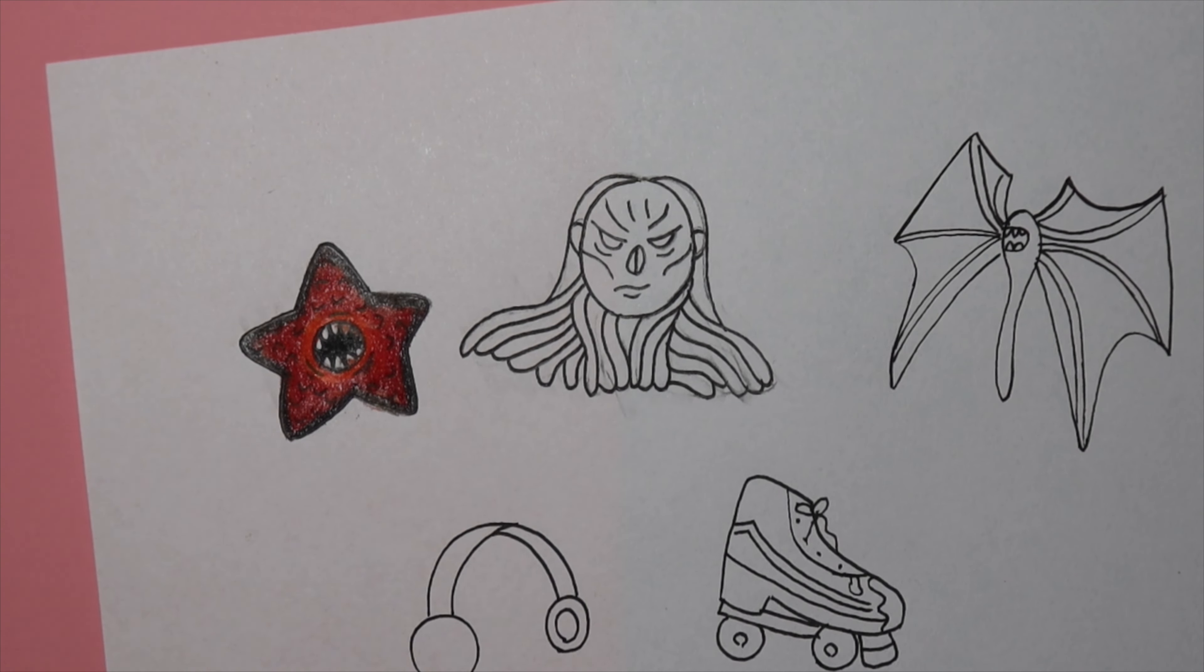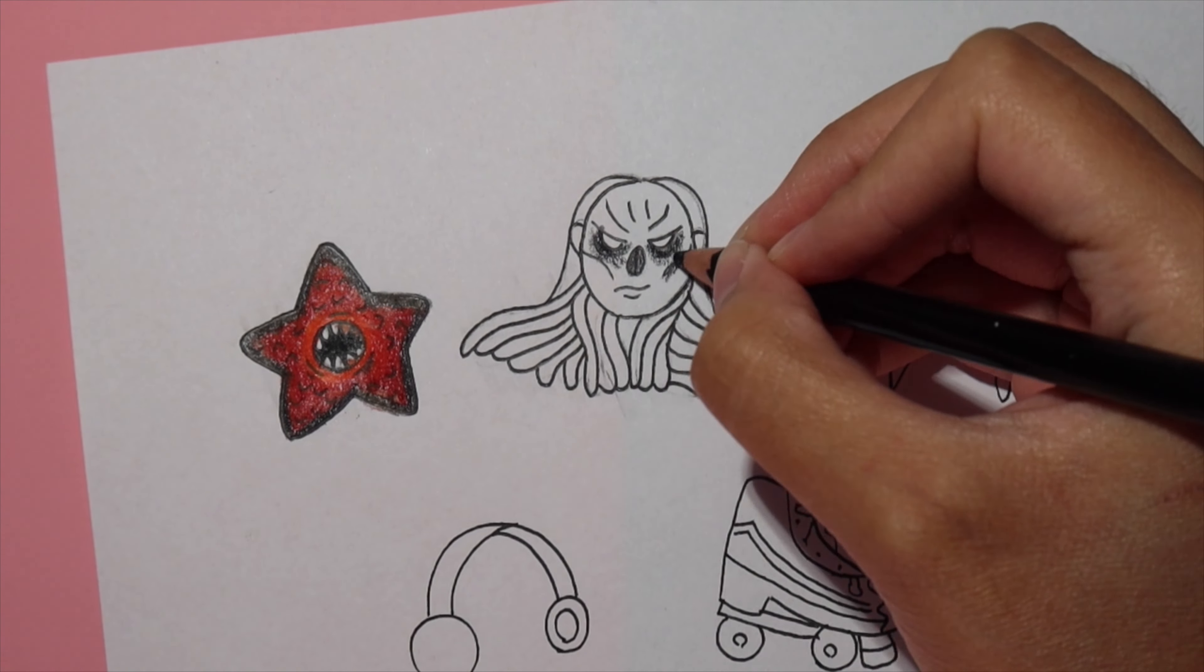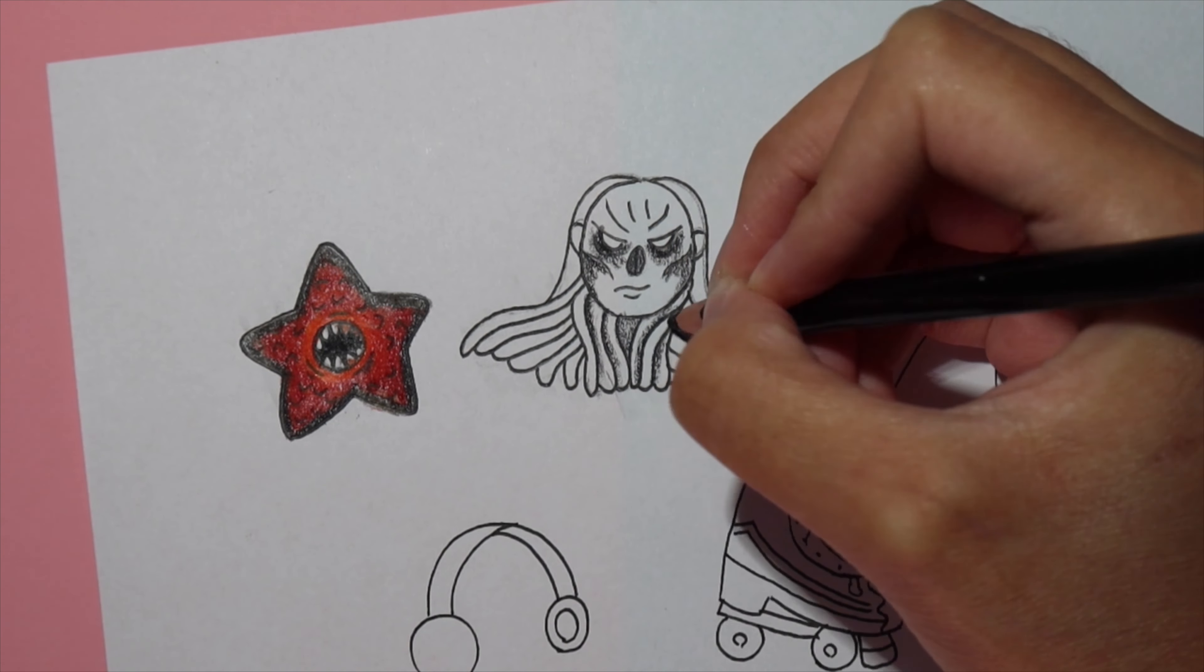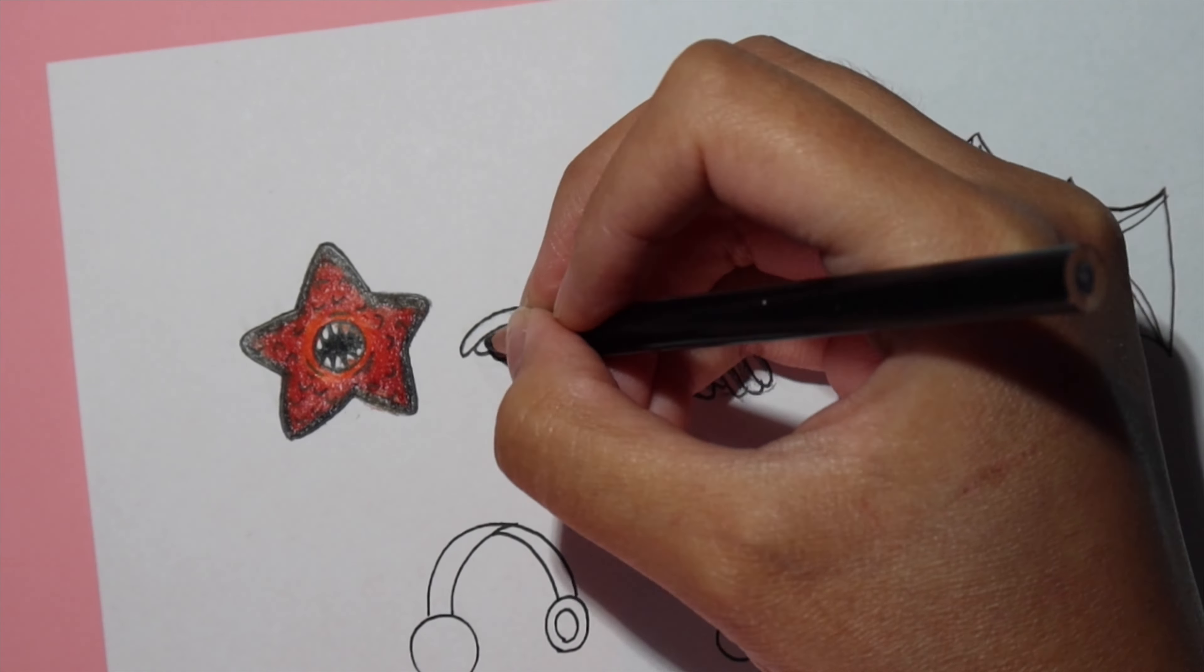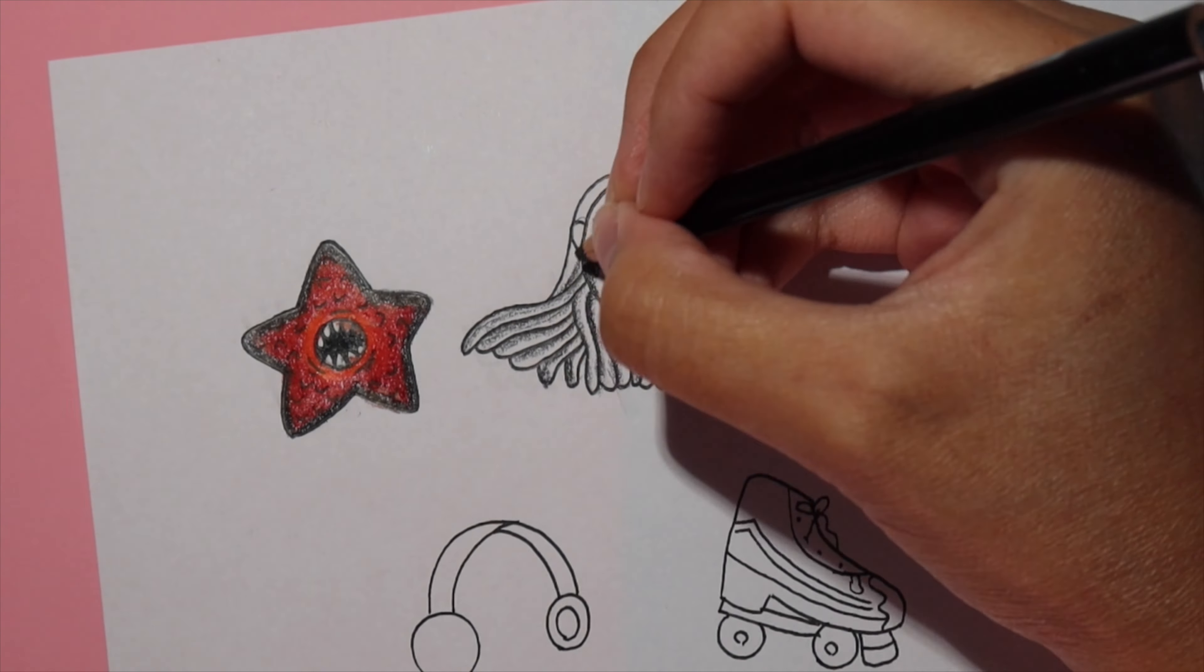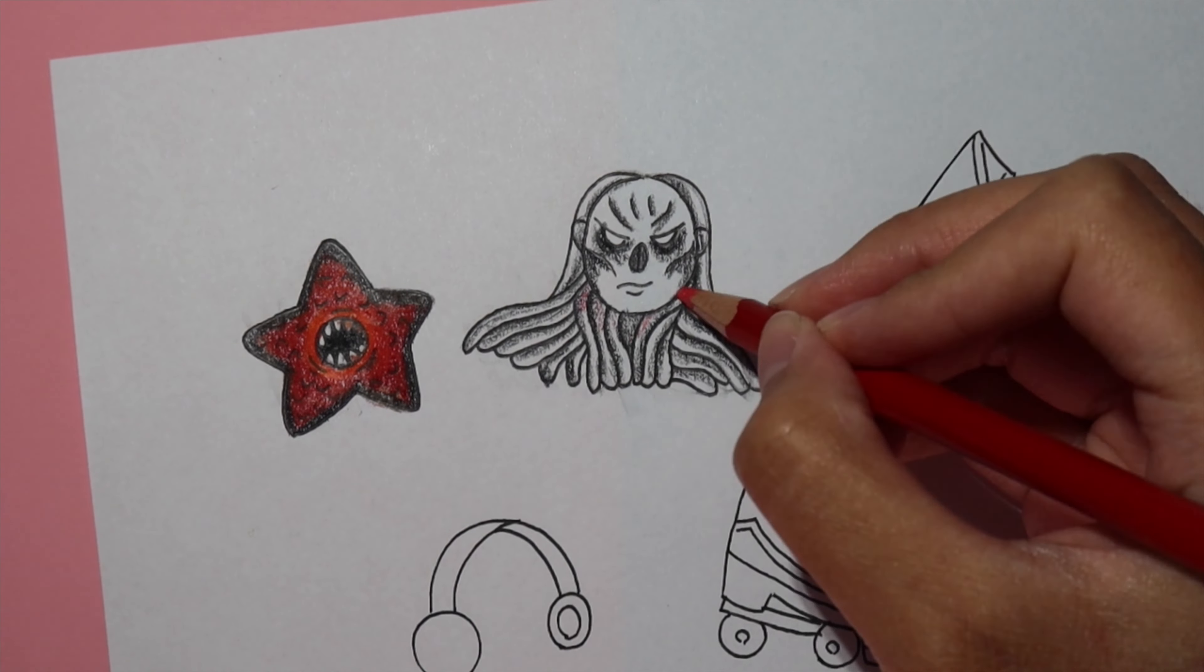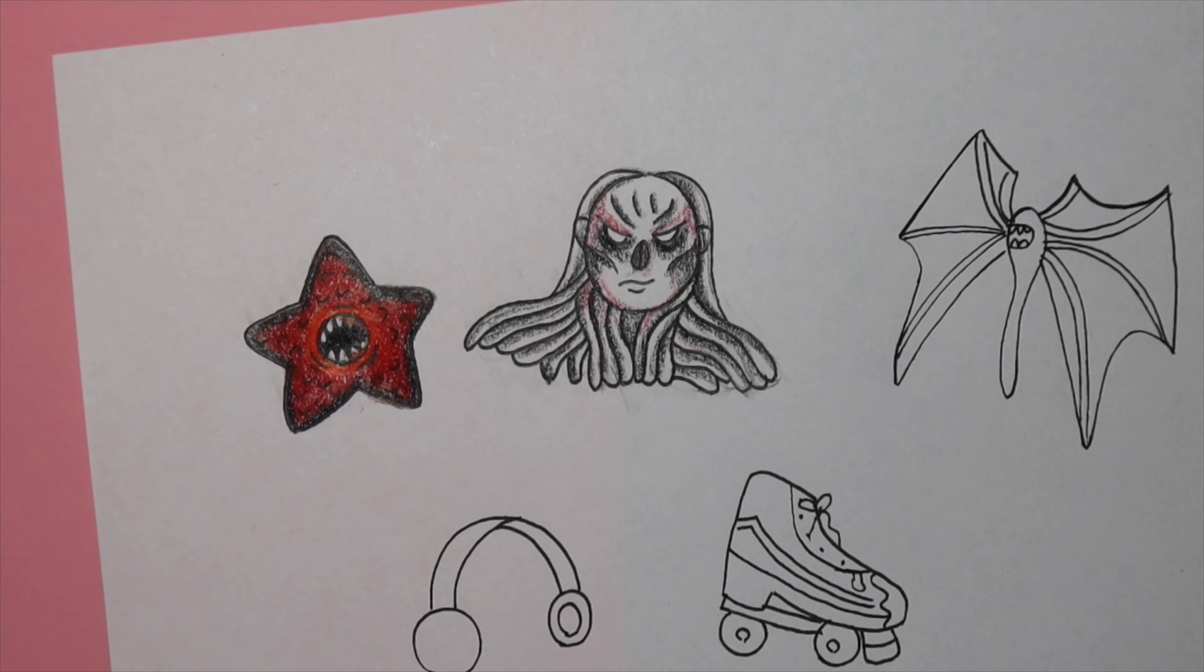To color the Demogorgon, I colored it using a gradient of colors. So I started by using the darkest color black on the outside edges and then I went in with a darker red and then the center is going to be the lightest red. So kind of just creating those shading effects to make it look like it's popping out or more realistic.